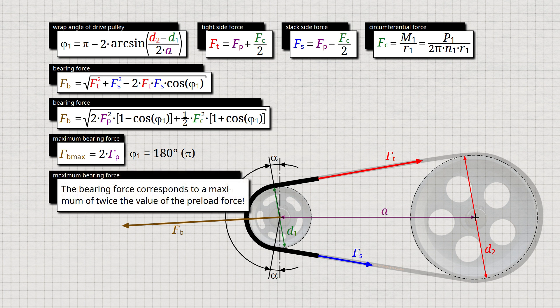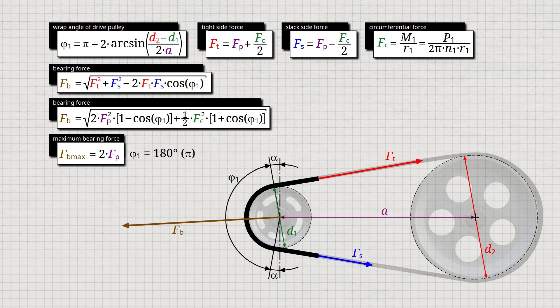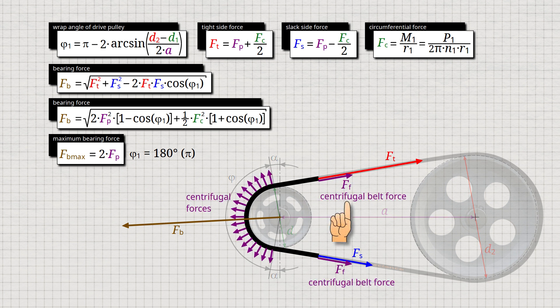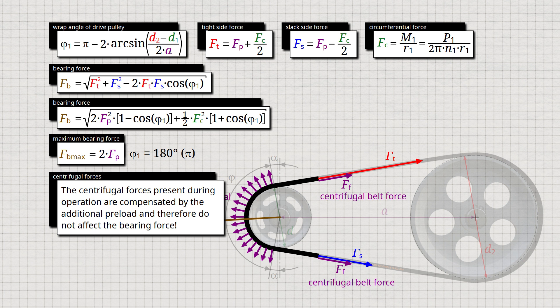Note that the bearing force corresponds to a maximum of twice the value of the preload force. When calculating the bearing forces in the operating condition, centrifugal forces must not be taken into account. Although the belt must be additionally preloaded at rest by the amount of centrifugal forces expected later in operation, this additional centrifugal belt force does not act on the bearings during subsequent operation because the belt tries to lift itself off the pulley with exactly this amount of force and thus relieves the bearings by the same amount. Only the preload force Fp is relevant to the bearing load during operation, which is why it is also called dynamic preload. Note that the centrifugal forces present during operation are compensated by the additional preload and therefore do not affect the bearing force.